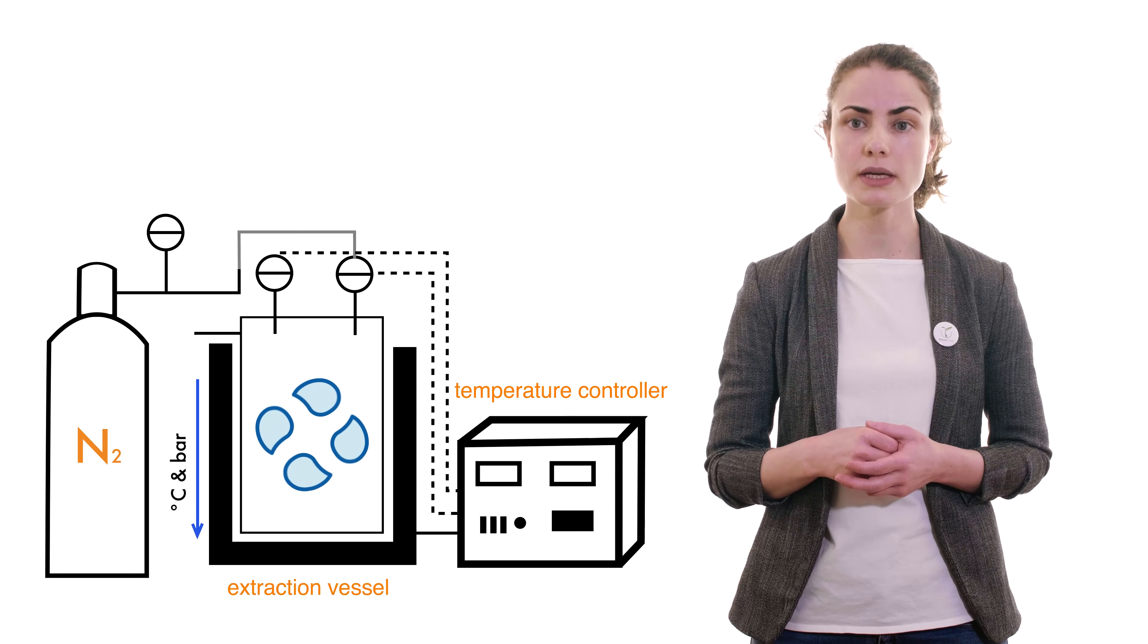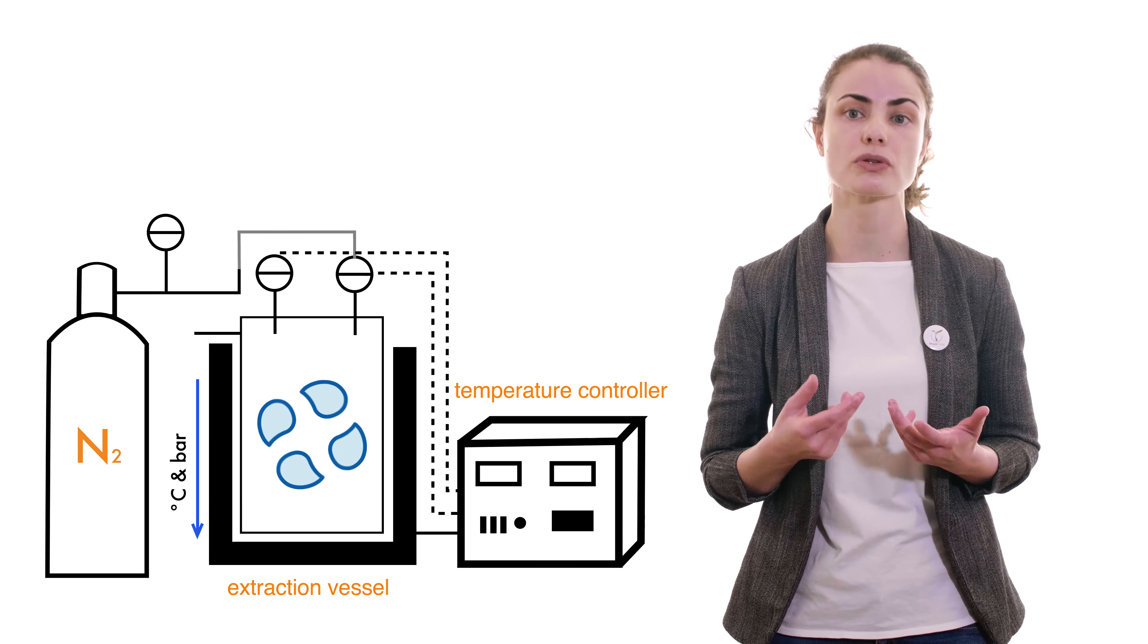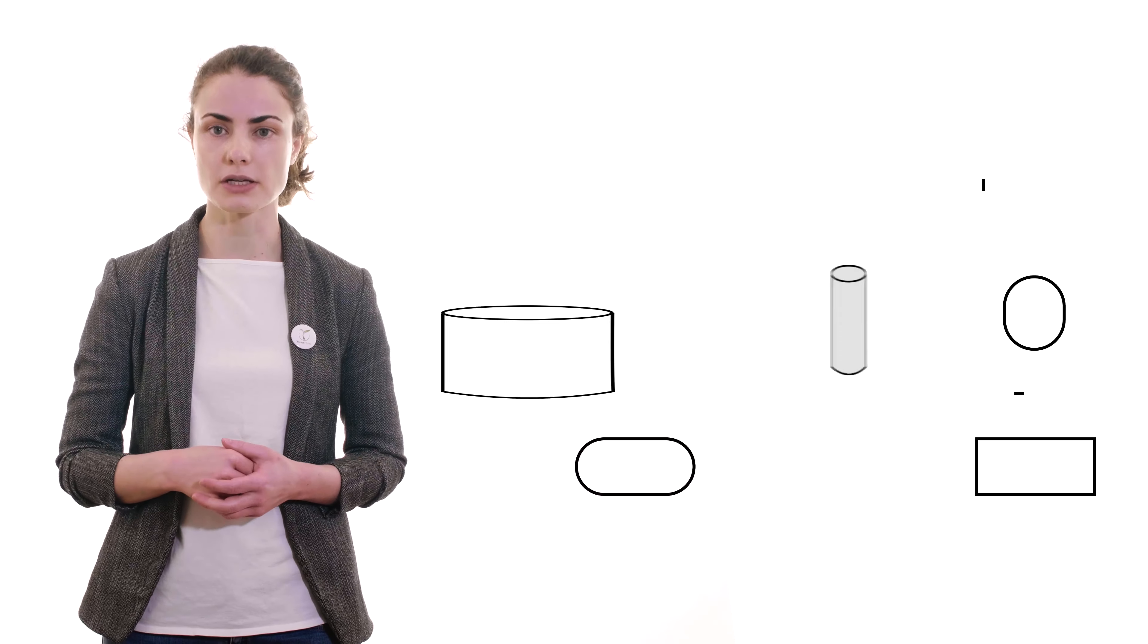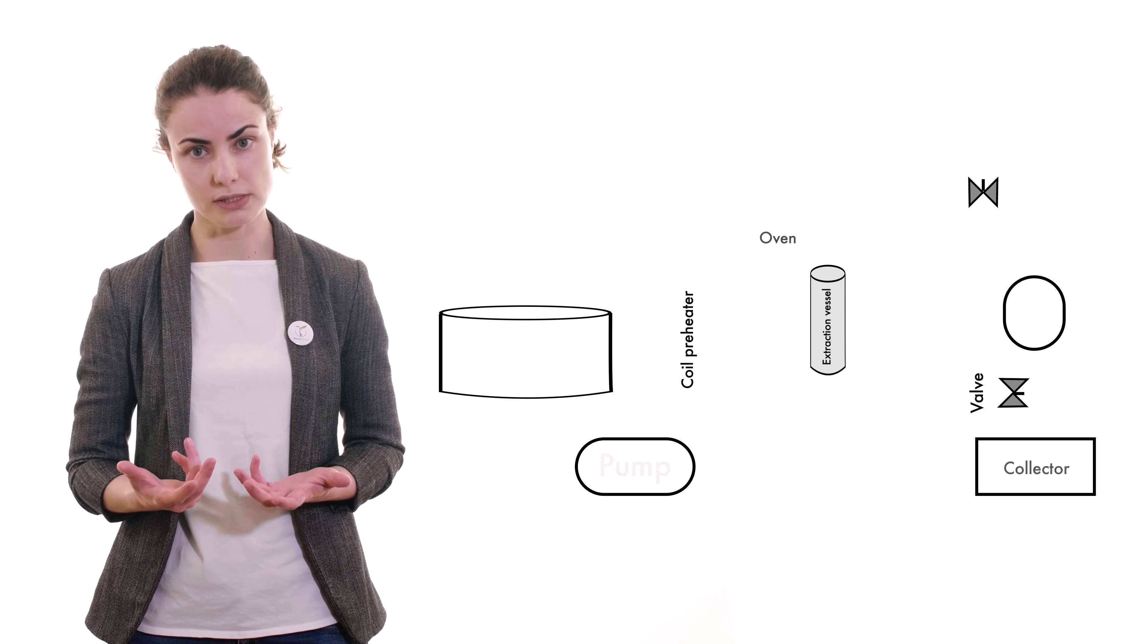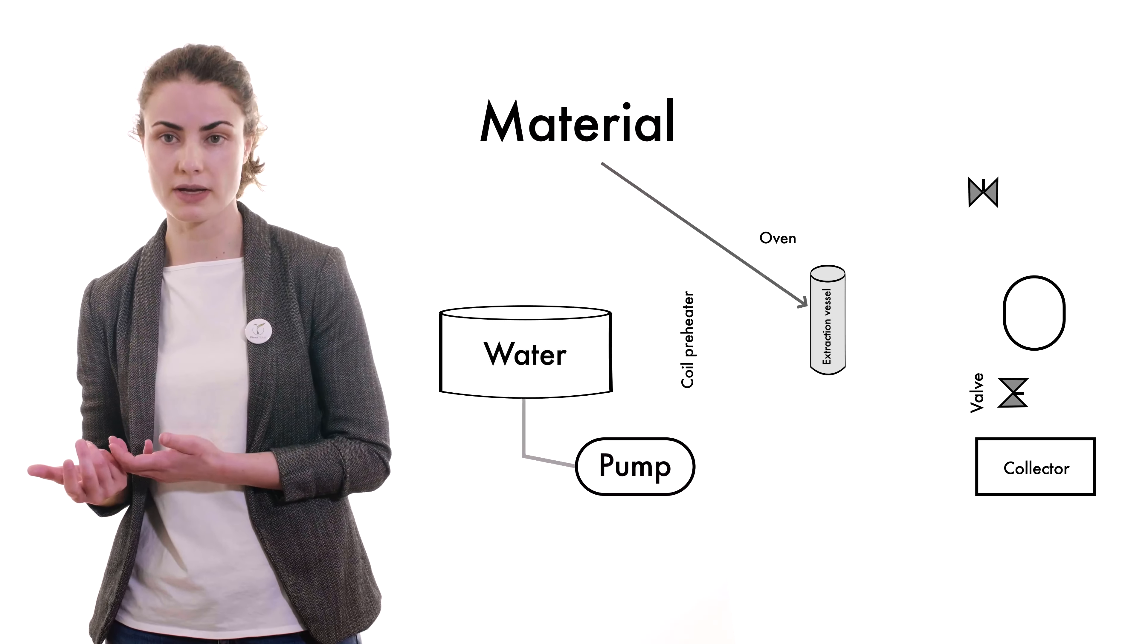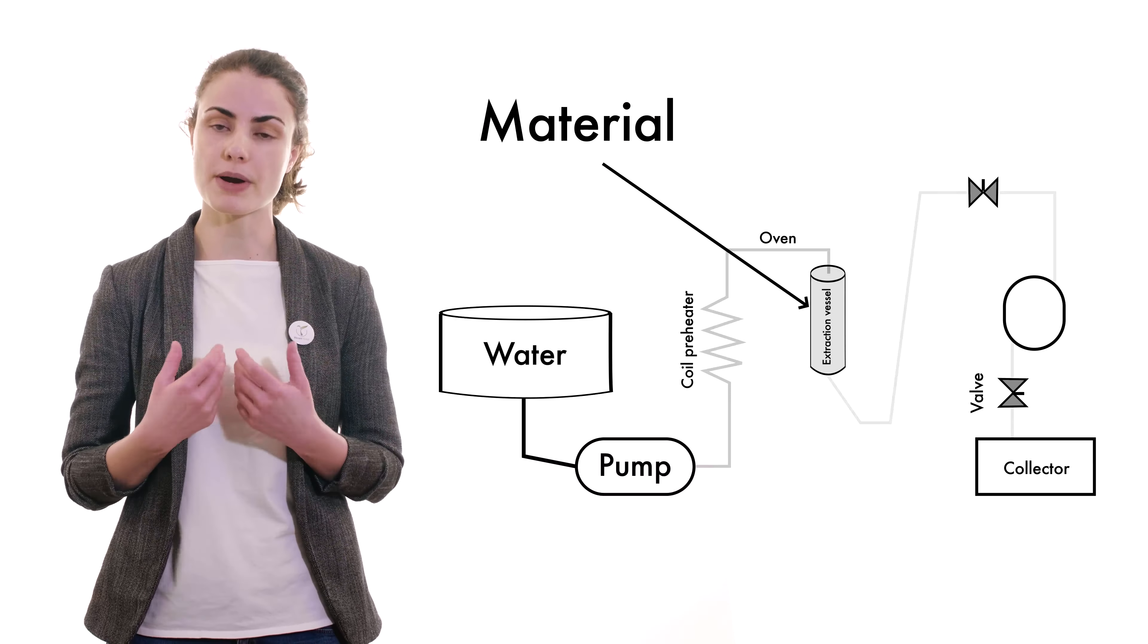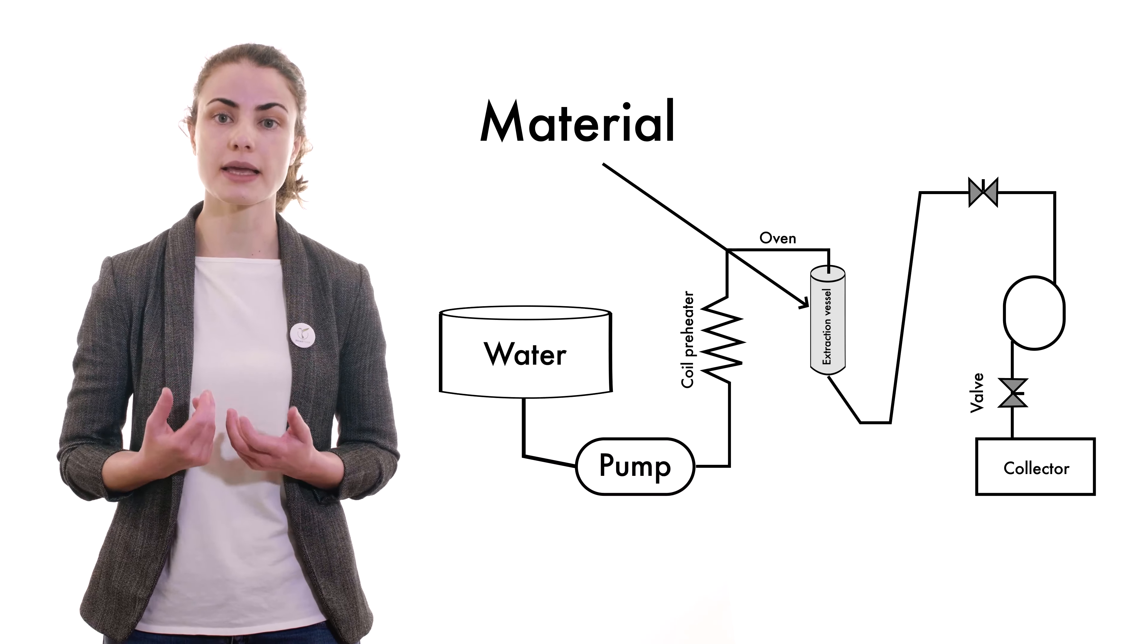This process is followed by cooling and separating the liquid phase which contains the target compounds. Dynamic subcritical water extraction is a continuous extraction process. Material is added to the extraction vessel and preheated water is continuously pumped and percolates through the fixed bed, carrying target compounds.